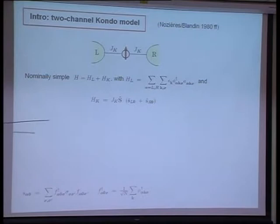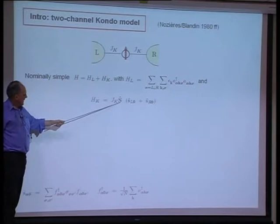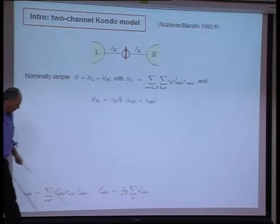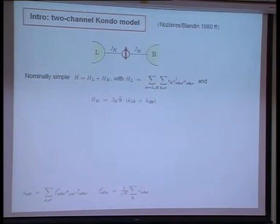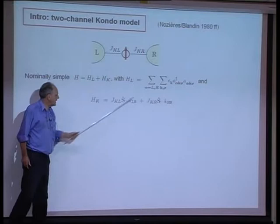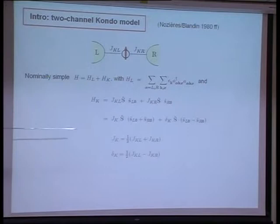But enough of sociology. The Hamiltonian for the two-channel Kondo model is extremely simple. We have a pair of non-interacting metallic leads, and we have the symmetric coupling of the spin one-half to the spin densities of the left and the right orbitals. So the Wilson chain for the left and the right lead, those orbitals being symmetric linear combinations of the conduction band states.